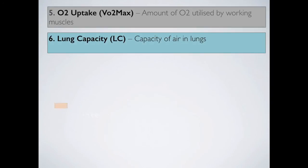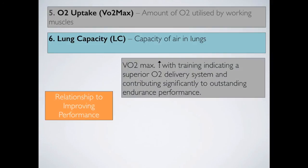Oxygen uptake is the amount of oxygen utilised by working muscles, also expressed as VO2 max. This increases with training and indicates a superior oxygen delivery system, contributing significantly to outstanding endurance performance. A trained athlete not only has more haemoglobin to carry oxygen but also develops capillary networks in the muscles, allowing oxygen to be diffused into the muscles more easily and CO2 to be extracted and removed. This efficient delivery system allows a trained person to use more of the available oxygen and perform better.